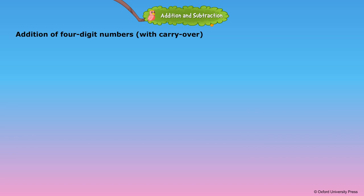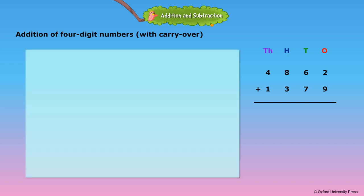Addition of 4-digit numbers with carryover. Let us add 4,862 and 1,379.